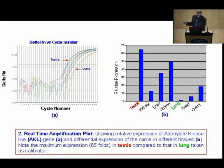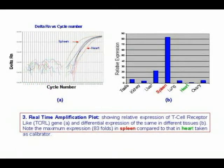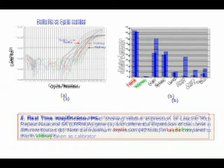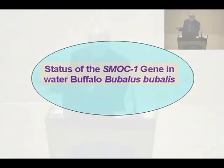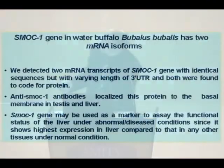When you have the gene sequence, you can do RT-PCR, dot-blot hybridization, and monitor real-time expression. For example, the adenylate kinase-like gene showed maximum expression in testis and least expression in lung. Another gene isolated was the secreted modular calcium-binding protein — SMOC — which we isolated from buffalo. SMOC is a protein involved in bone mineralization and calcium metabolism, and obviously has to do something with osteoporosis as well.